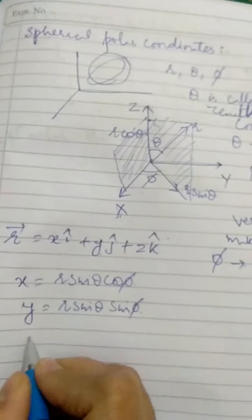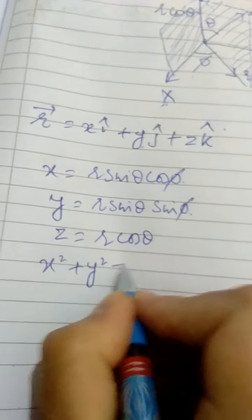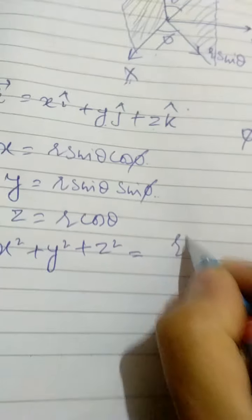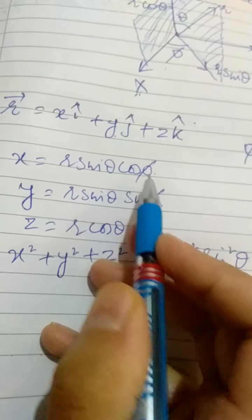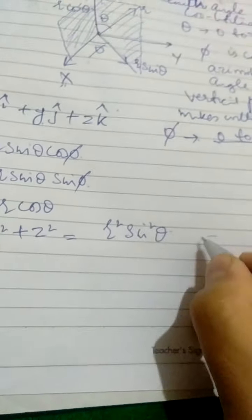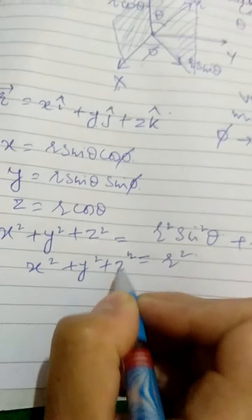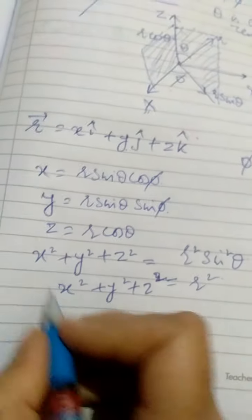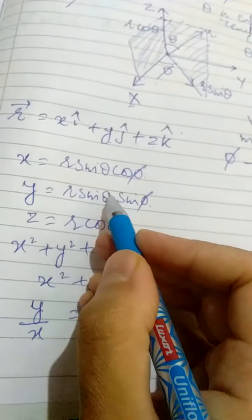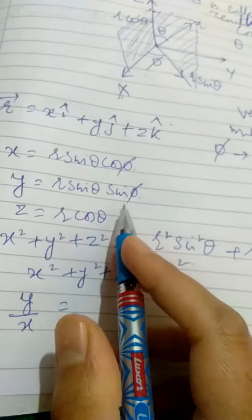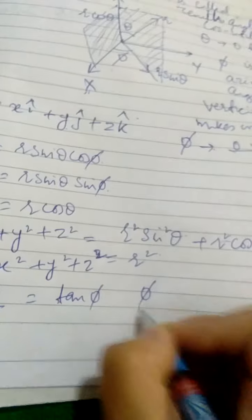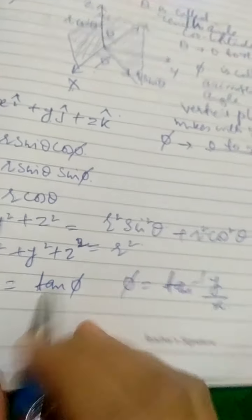And z = r cos theta. Now, squaring and adding x² + y² + z²: r² sin²θ is common, sin²φ + cos²φ = 1, leaving r² sin²θ + r² cos²θ = r². So x² + y² + z² = r². If you divide y by x, r sin theta cancels and you get sin phi over cos phi, which is tan phi. Therefore phi = tan⁻¹(y/x).